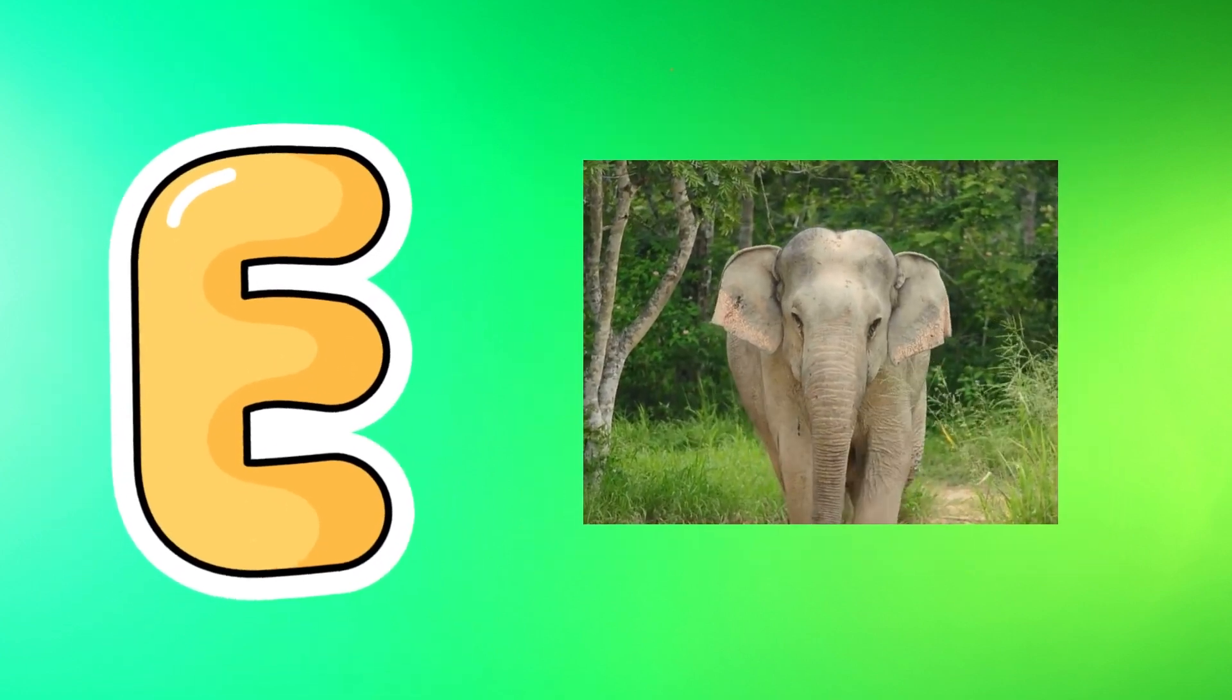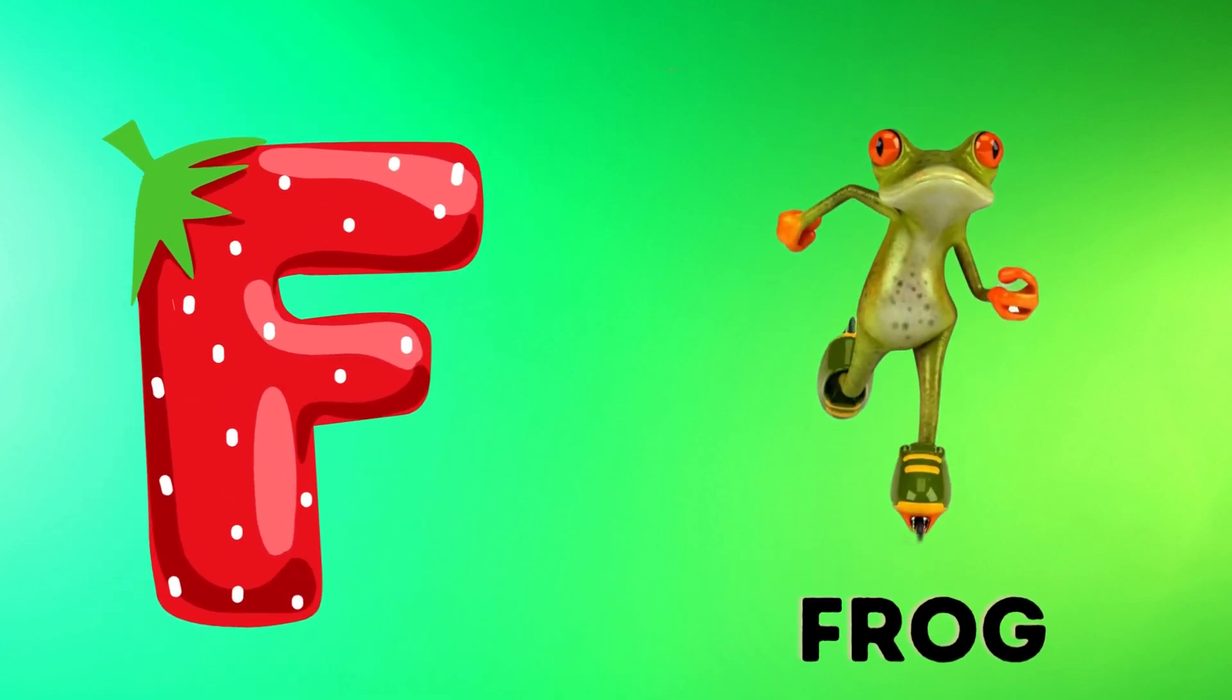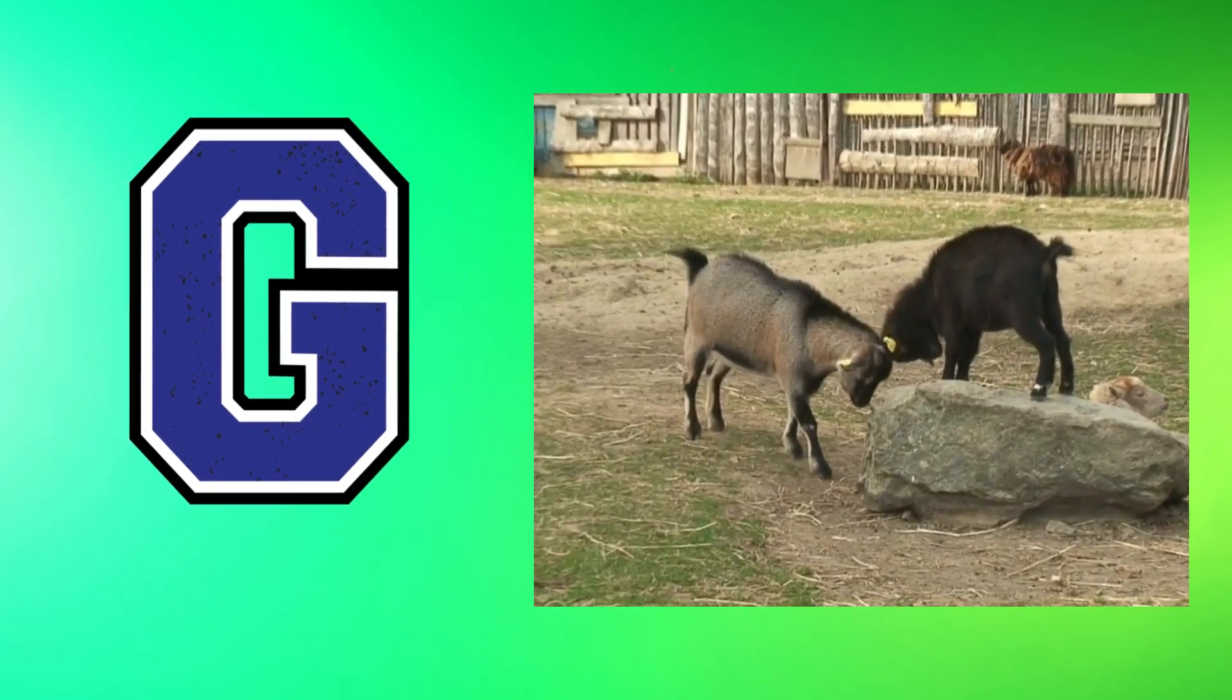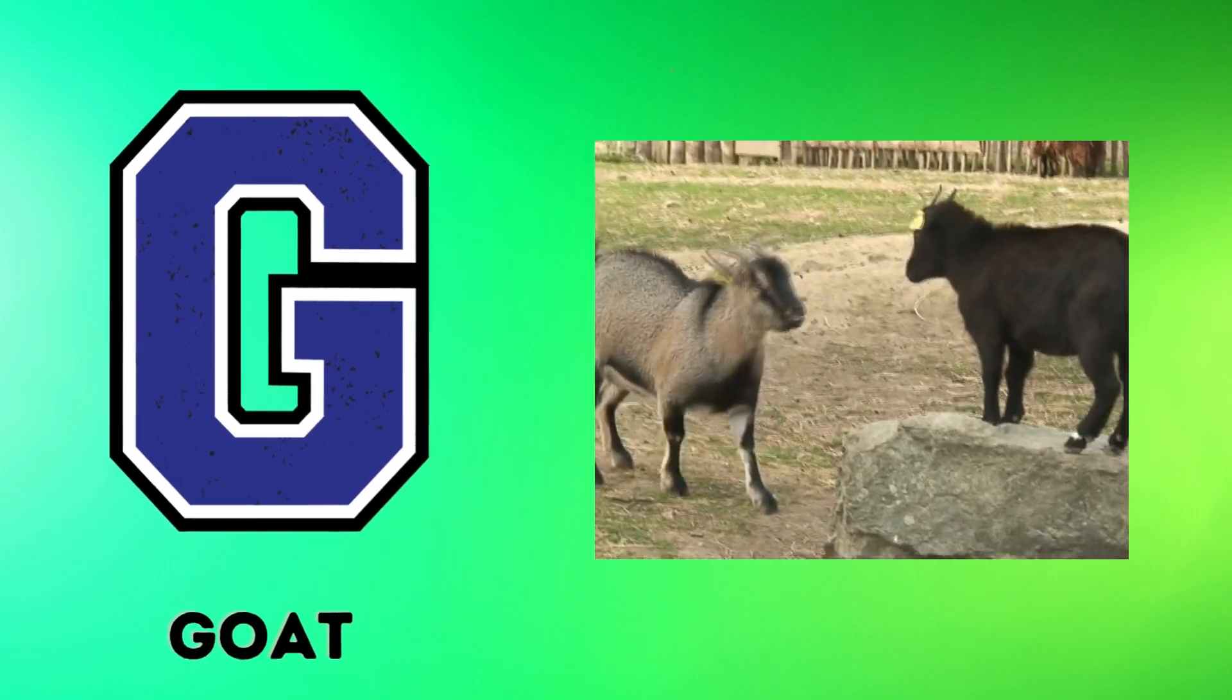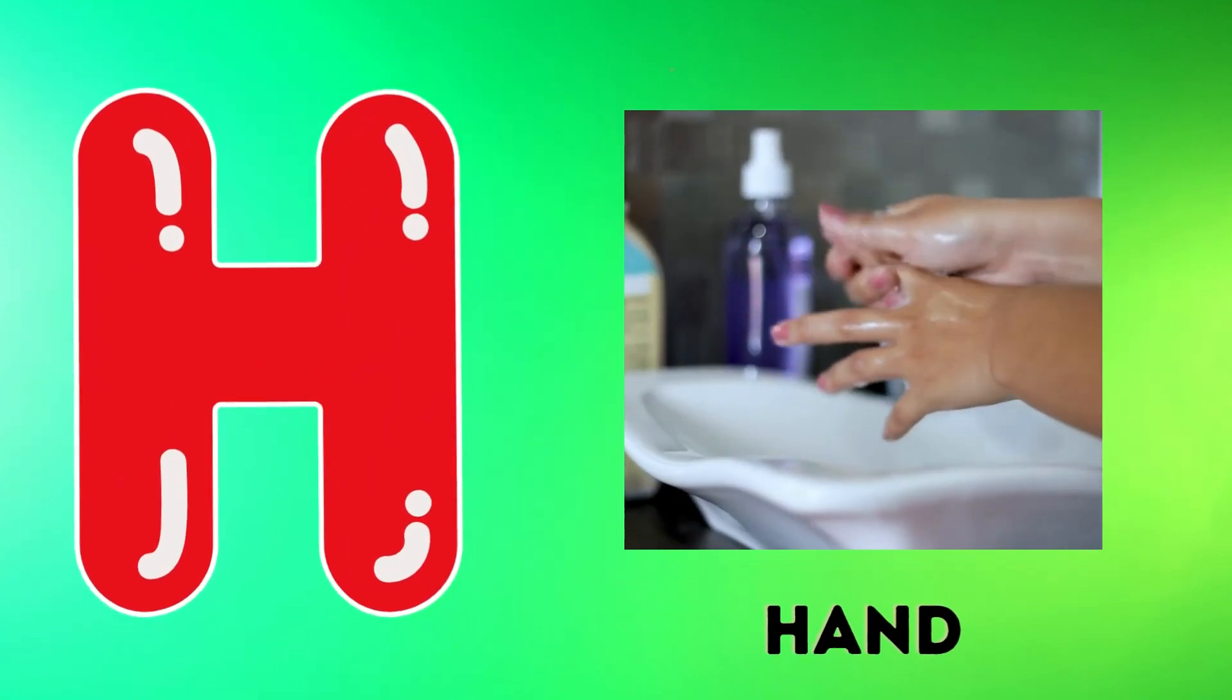E is for elephant, e-e-elephant. F is for frog, f-f-frog. G is for goat, g-g-goat. H is for hand, h-h-hand.